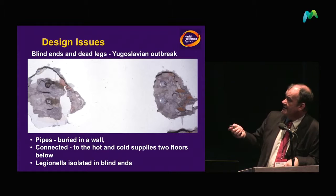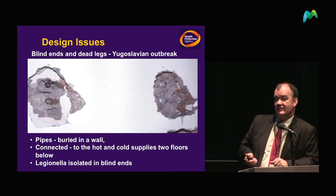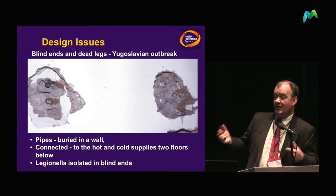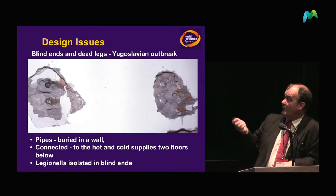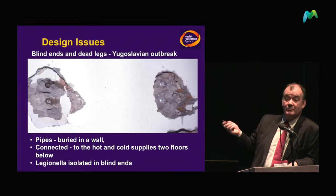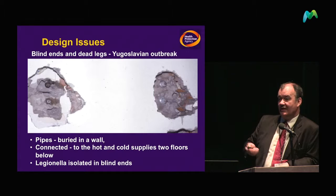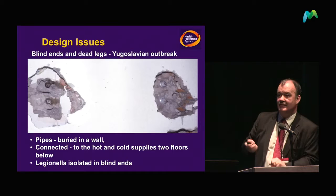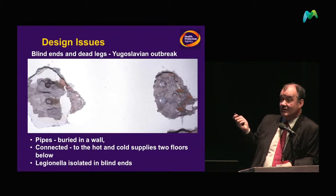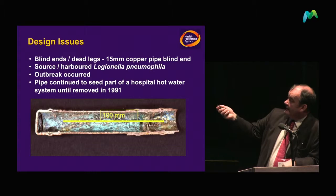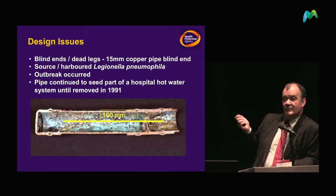This was taken from a Yugoslav hospital outbreak — pipes that were actually buried in the wall. Despite all the efforts of the hospital to find the cause, they could not find it, but by progressive sampling were able to narrow it down to one section. At that point they decided to go into the wall and found blind ends — someone had at some point revised the plumbing and instead of capping it off properly just left the end.